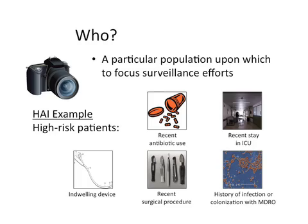Developing a standard case definition can be done by asking the following questions: who, what, where, when, and how. Who is the population you wish to track in order to achieve your surveillance goals? For example, if you're performing surveillance for an MDRO like MRSA, you may want to select high-risk patients — such as those with recent antibiotic use, those with a recent stay in the ICU, those with an indwelling device, those who may have had a recent surgical procedure, and those with a history of infection or colonization with an MDRO.